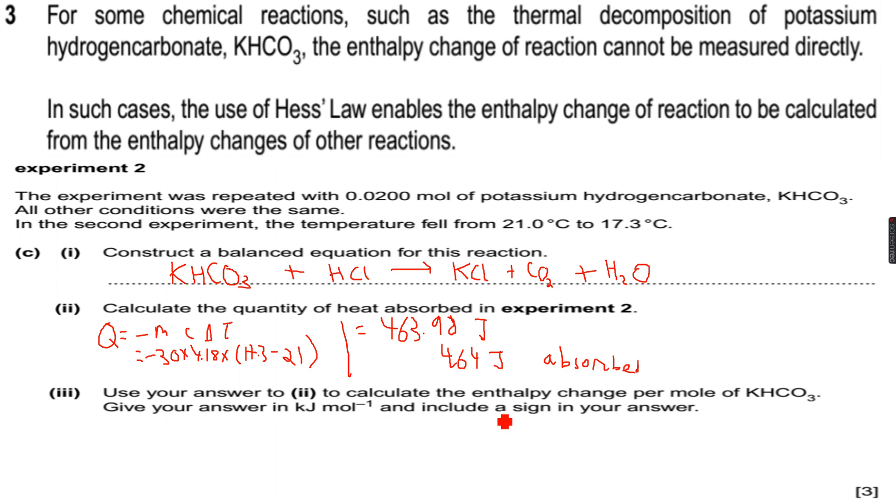Use your answer to 2 to calculate the enthalpy change per mole of KHCO3. So again, the same thing, delta H is equal to Q upon N. So this is equal to 0.46398 over N, which is 0.02, which is equal to 23.2 kilojoules per mole, plus 23 because this is an endothermic reaction, plus 23.2 kilojoules per mole.